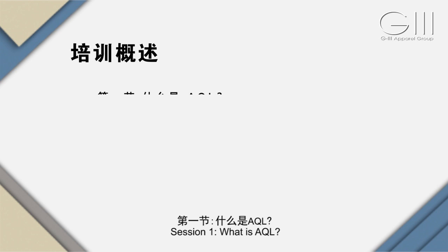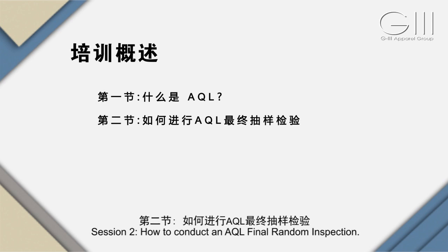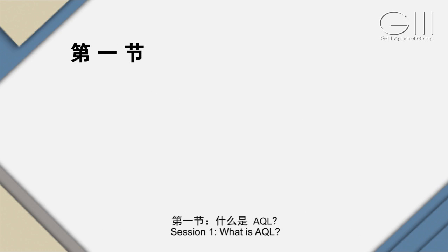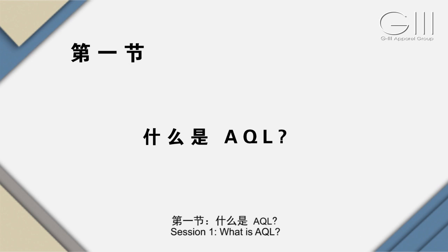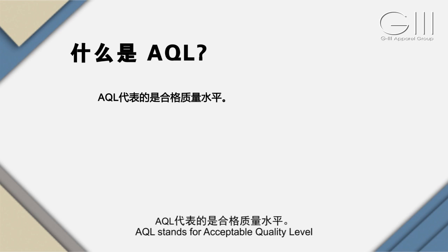培训概述。第一节：什么是AQL；第二节：如何进行AQL最终抽样检验。AQL代表的是合格质量水平（Acceptable Quality Level）。